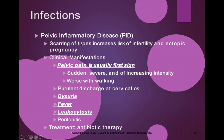With PID, a major concern is scarring of the tubes, which increases the risk of infertility and ectopic pregnancies — where implantation occurs somewhere other than the uterus. Pelvic pain is usually the very first sign; it's sudden, severe, and of increasing intensity, worse with walking. There can also be purulent discharge at the cervical os, which is the opening of the uterus.